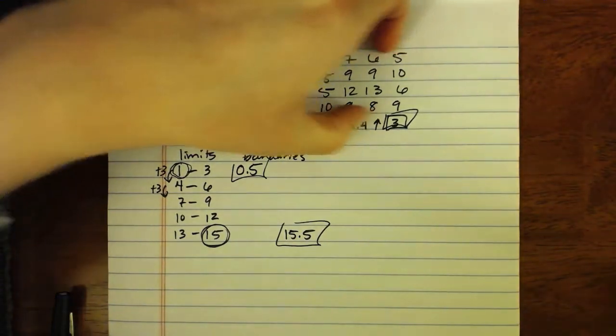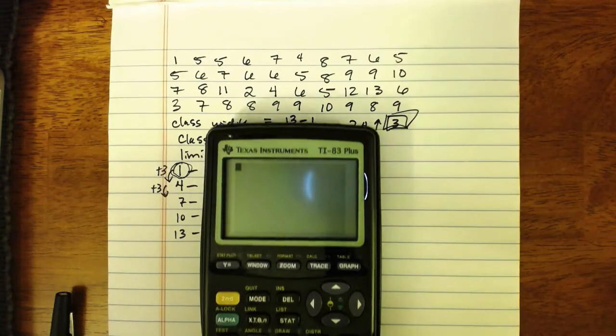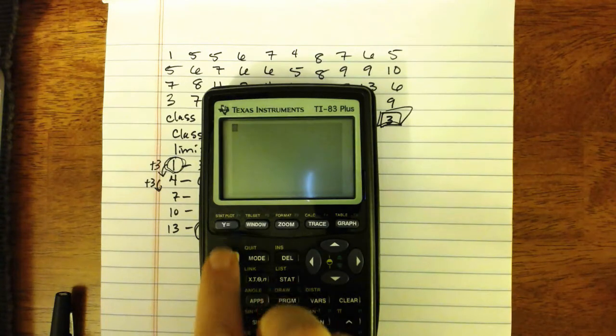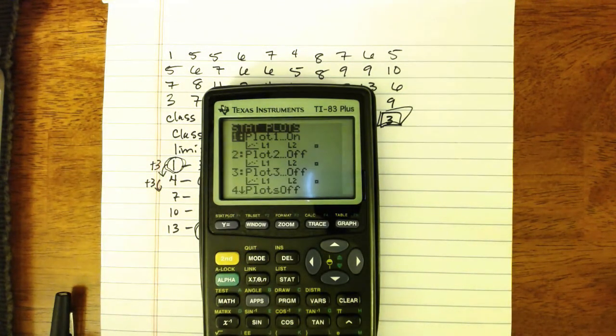So you need to put this data into a list. And then what you do once your data are put into the calculator is press 2nd Y equals, which will take you to your stat plot menu.